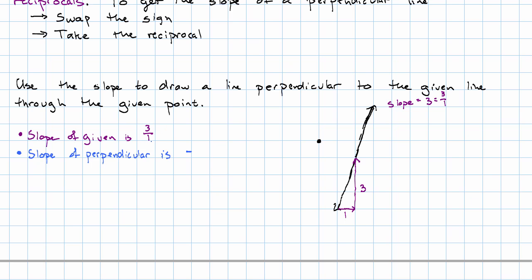This number is 3 over 1. The slope of the perpendicular line will be its reciprocal 1 over 3. So that means I go right 3 down 1, thinking of this as negative 1 over positive 3.